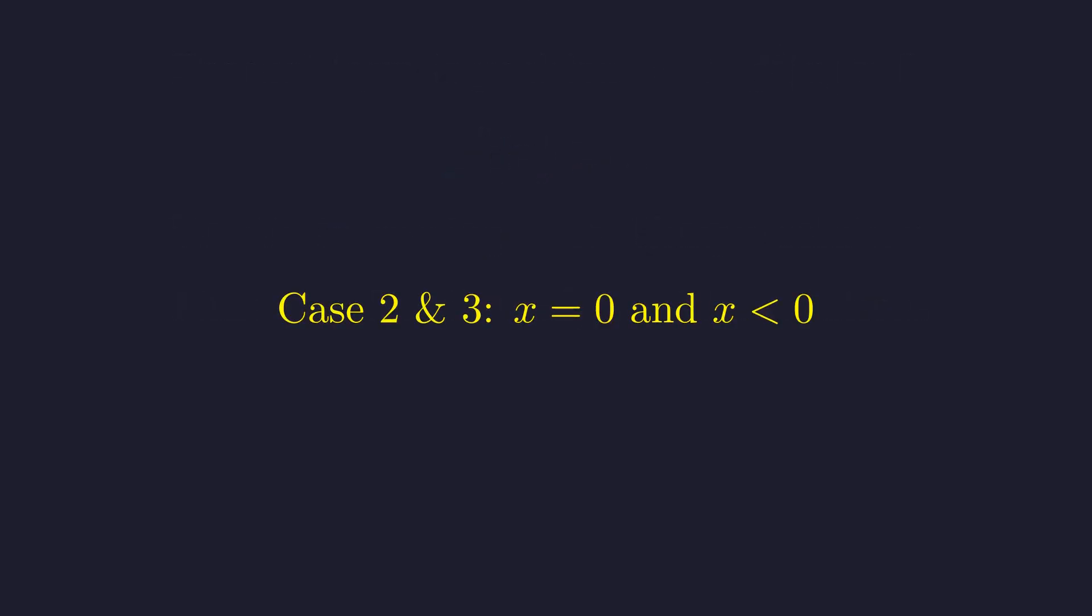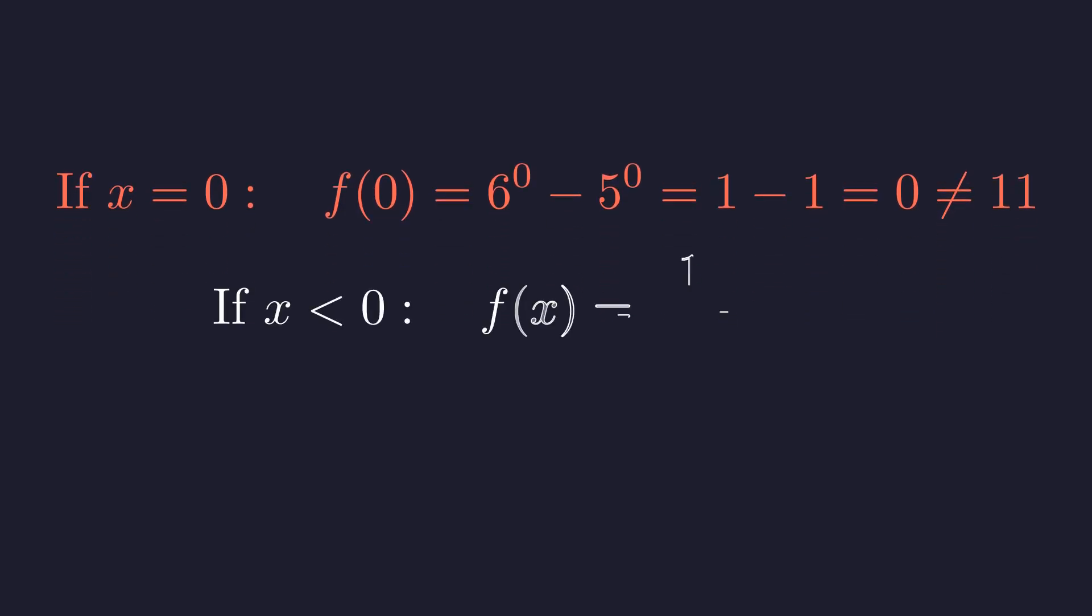But we're not done yet. To be completely rigorous, we need to check what happens when x equals 0 and when x is negative. When x equals 0, anything to the power of 0 is 1, so we get 1 minus 1, which is 0. That's definitely not 11, so x equals 0 is not a solution.